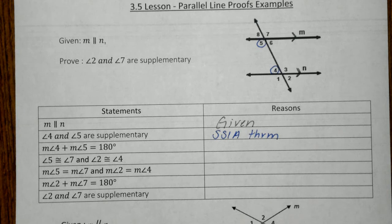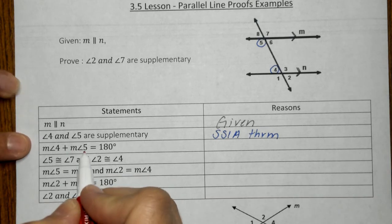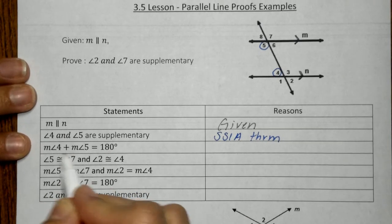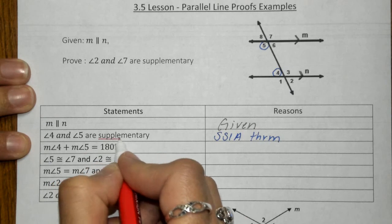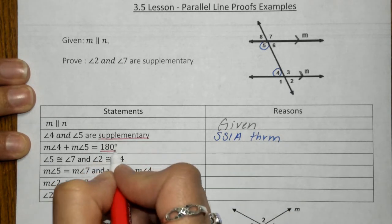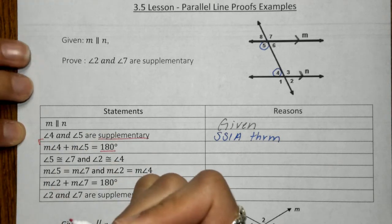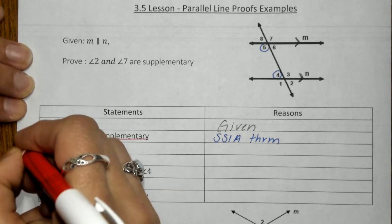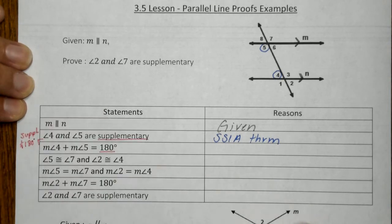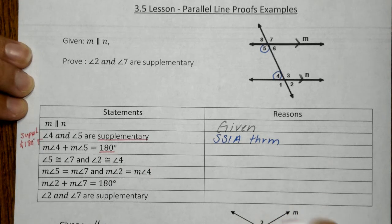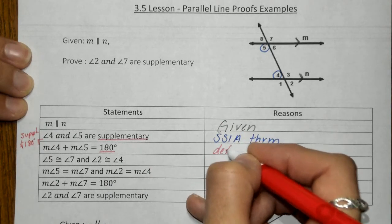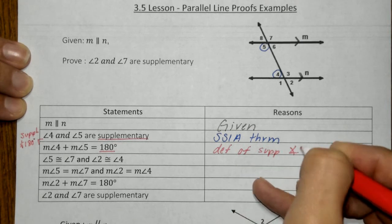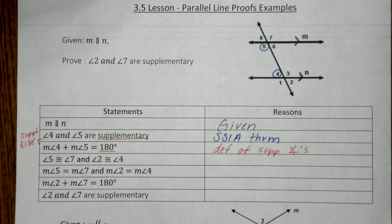Next, we look at the measurement of angle four plus the measurement of angle five adding to equal 180 degrees. How do we know they add to equal 180 degrees? Well, here I see supplementary, and here I see 180 degrees. On that little angle cheat sheet from last unit, we can see that if we have supplementary angles and 180 degrees, how do we know they add to equal 180? Because that's the definition of supplementary angles — that's what we've learned since the day we learned about supplementary angles.